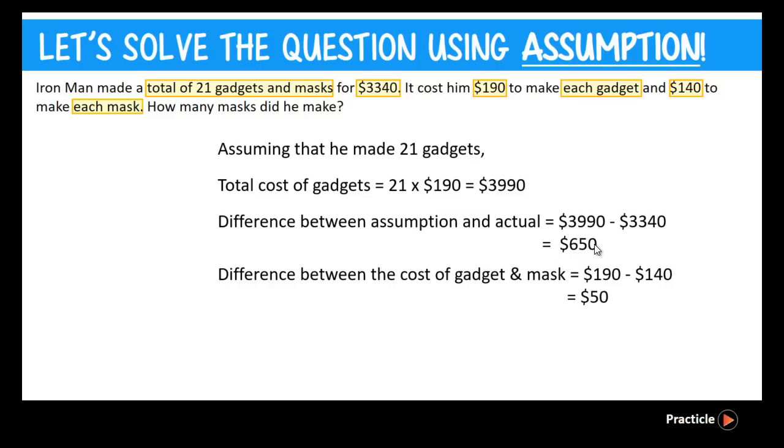So after finding this, what can we do? We know that Iron Man made a total of 21 items. But these 21 items cannot all be gadgets, because the amount that he spent will actually exceed what he actually spent. So some of them must be masks. And in order to find the number of masks, what we do is to replace each gadget with a mask. If each gadget costs $190, every time I replace one gadget with one mask, I will actually lower the cost by $50. Am I right?